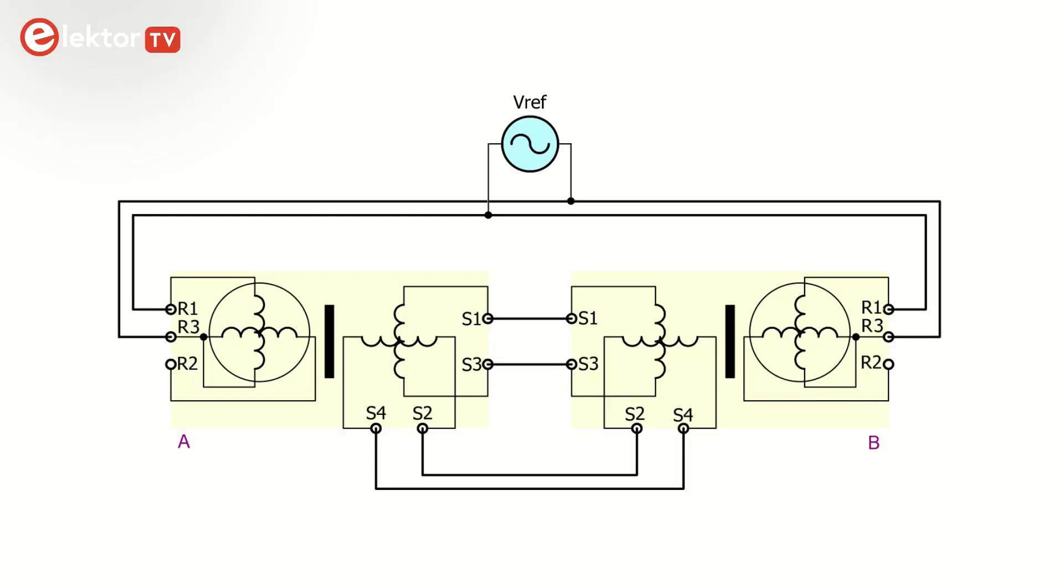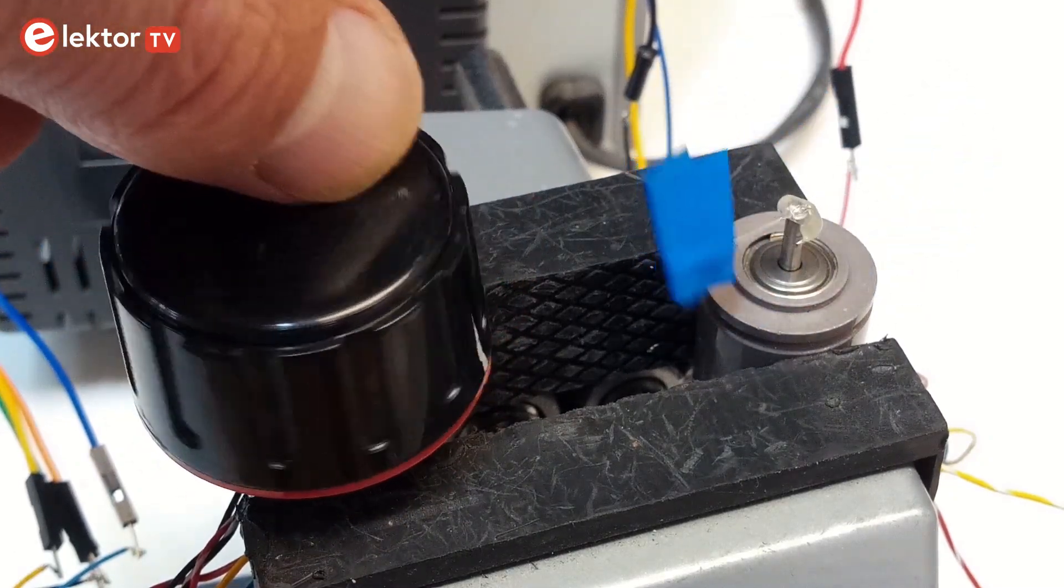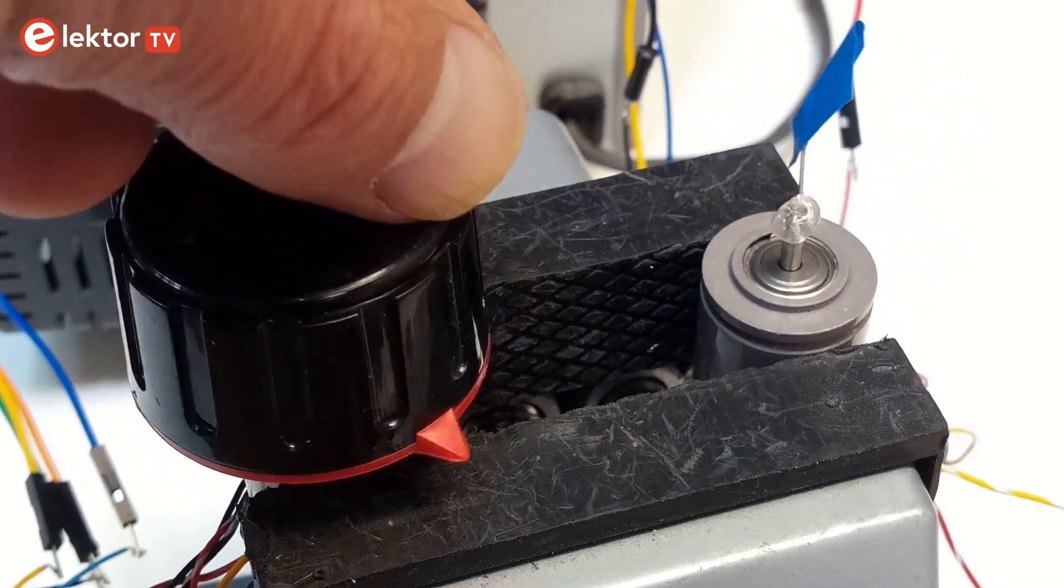If you connect the output windings of two resolvers in parallel, and apply the same reference voltage to both devices, then one resolver will follow the other. That is, if you rotate the shaft of one resolver, the other resolver will copy the movement of the first.